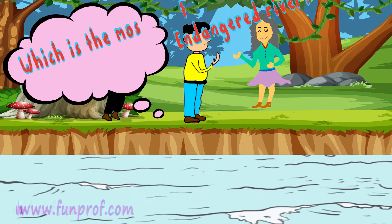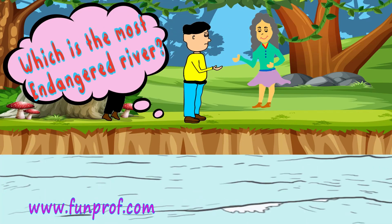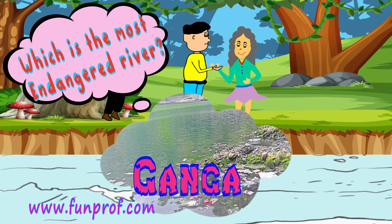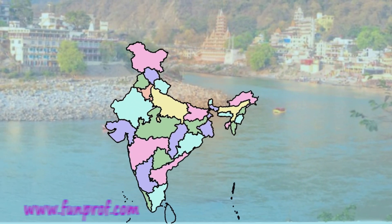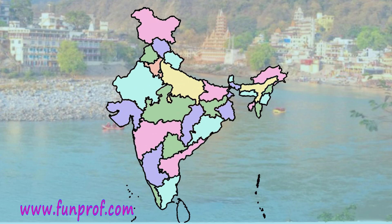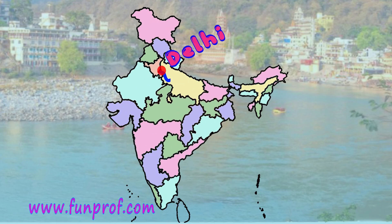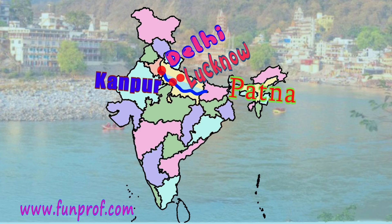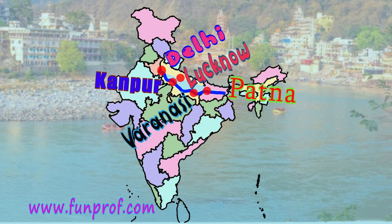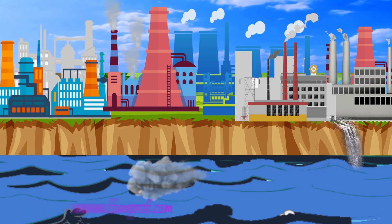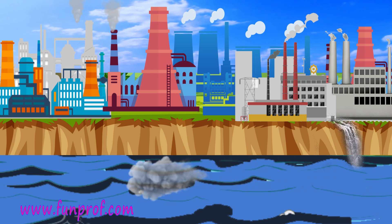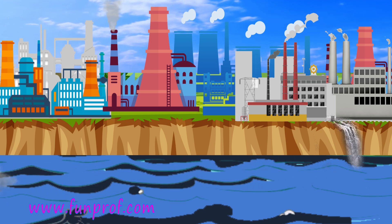Which is the most endangered river? Ganga is the most endangered river. Some cities where Ganga's water flows include Delhi, Lucknow, Kanpur, Patna, Varanasi, etc. Kanpur is the most polluted — it has more than 5,000 industries.